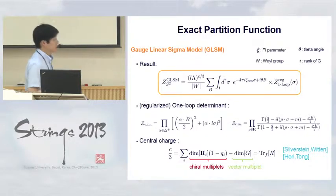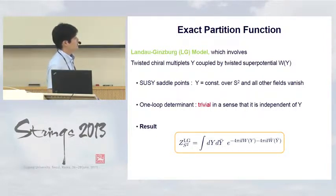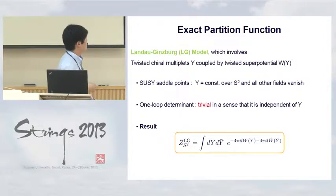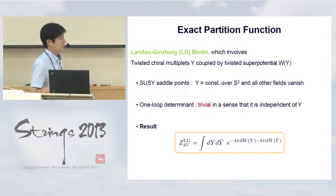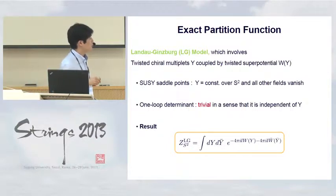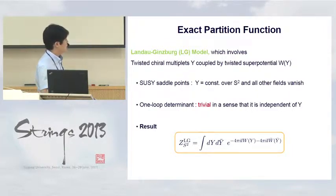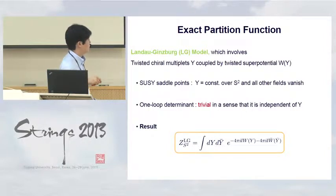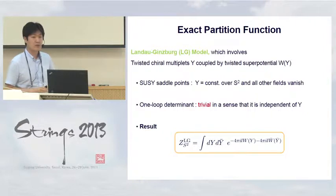Let me now discuss a different type of theory in two dimensions: Landau-Ginzburg theories, which involve twisted chiral multiplets coupled by twisted superpotentials. In this case, the supersymmetric saddle points are extremely simple — the complex scalar field in the twisted chiral multiplet can take an arbitrary constant value on the two-sphere, and all other fields vanish. The one-loop determinant around the saddle points is trivial, independent of the constant value. As a consequence, the exact two-sphere partition function of this Landau-Ginzburg theory reduces to a simple ordinary integral, where the integrand depends only on the twisted superpotential.